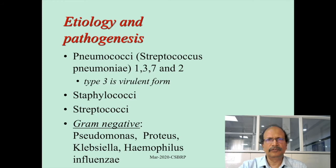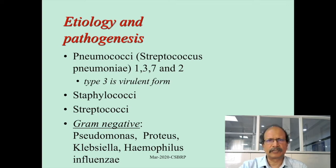Looking at the pathogens which can cause lobar pneumonia, pneumococcus is the main one — Streptococcus pneumoniae, types especially 1, 2, 3, and 7 — and Staphylococcus, Streptococcus, and gram-negative organisms are also known to produce lobar pneumonia.